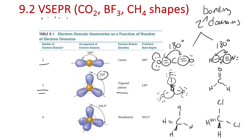So it sticks to the 120 degree trigonal planar geometry. The same thing applies to a molecule like formaldehyde — we have one, two, three domains, so these are about 120 degree bond angles too.